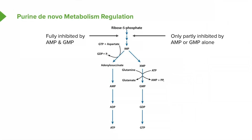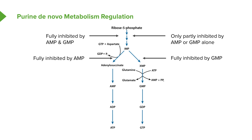If we have a lot of AMP, we shut off the left pathway because that pathway is fully inhibited by AMP. And if there's no GMP, the other side will not be inhibited — only when the other side has plenty of GMP will it be inhibited as well. Similarly, if we had a lot of GMP and very little AMP, then the left pathway would be favored and the right pathway would be inhibited. So we see this intricate system of regulation is designed to balance the amounts of AMP and GMP very carefully.